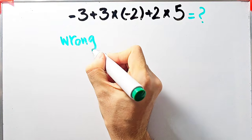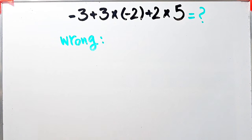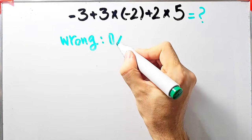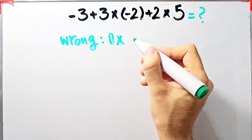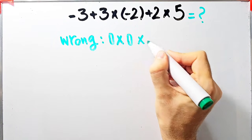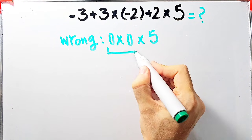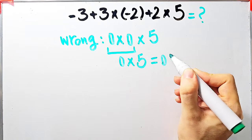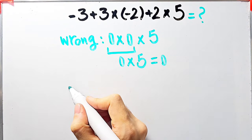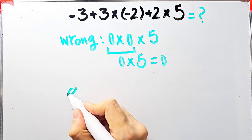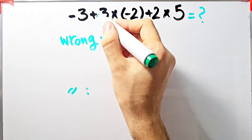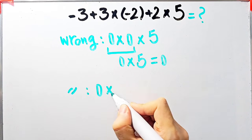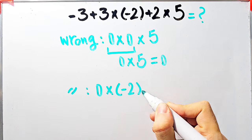Some people start from the left without paying attention to the priority of mathematical operations. They say: negative 3 plus 3 equals 0, then 0 times negative 2 plus 2, which equals 0, then times 5 gives 0. Others say: negative 3 plus 3 equals 0, then 0 times negative 2 plus 2, then times 5.